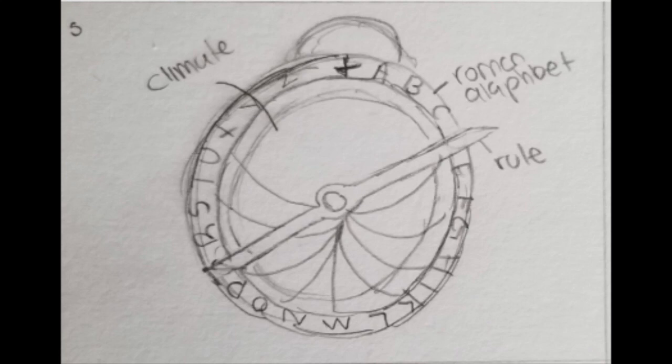One side is called the mother front. The mother front is made up of three distinct parts: the climate, which makes up the majority of the system; the roman alphabet, which represents the hours within the day; and the rule, which rotates around to configure the mother front at specific times.